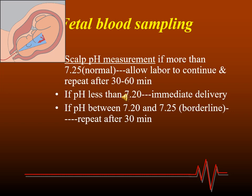If the CTG returns to normal, we repeat sampling after 60 minutes. If the CTG is still pathological, repeat after 30 minutes. This is because even if the current pH is normal, the fetus could have hypoxia that has not yet reached the degree of acidosis, but after a period may develop acidosis. So it should be repeated.